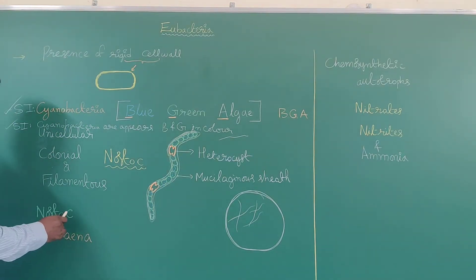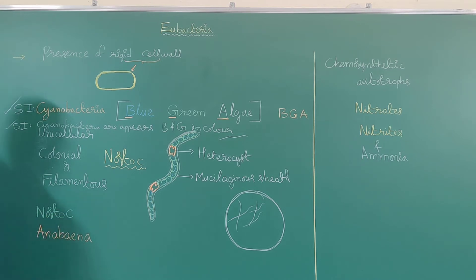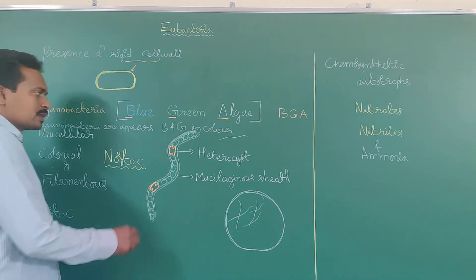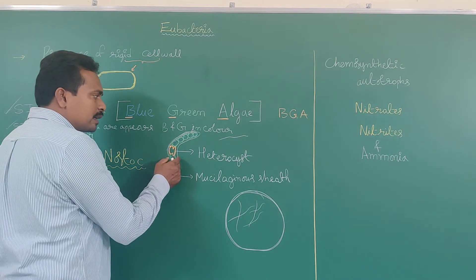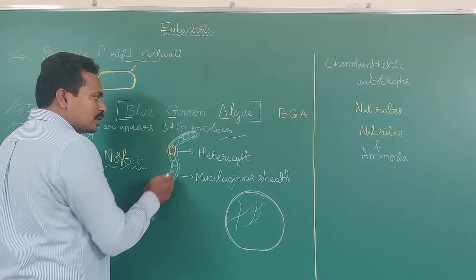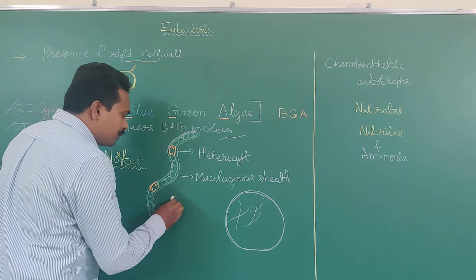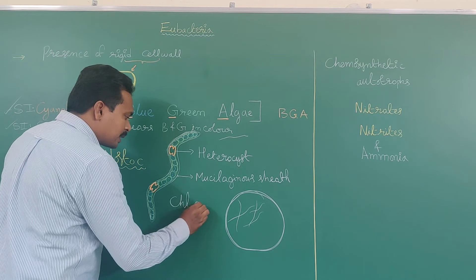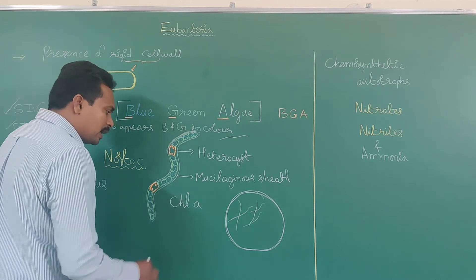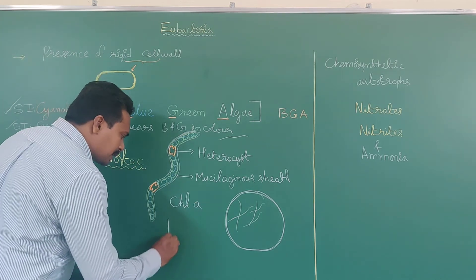So what are the examples of blue-green algae? Nostoc and Anabaena. This blue-green algae consists of chlorophyll A, phycocyanin pigment, and phycocyanin.